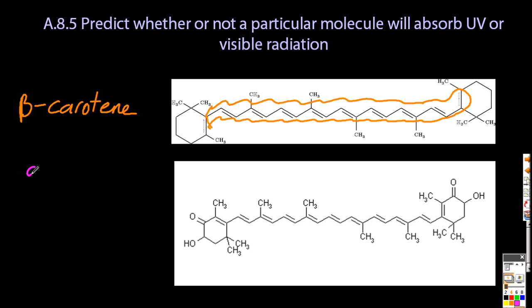The chemical below with the unpronounceable name is actually another food coloring. And that also has lots and lots of single and double bonds conjugated together. So that will absorb visible.